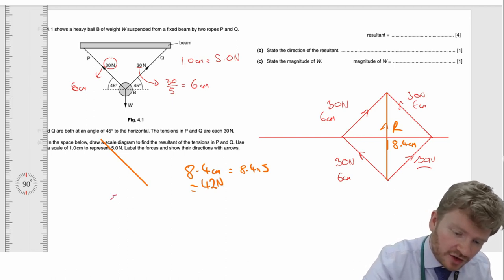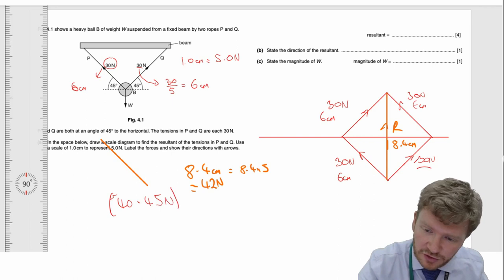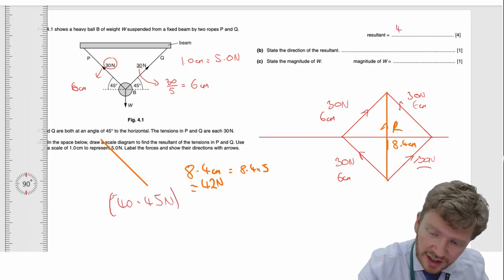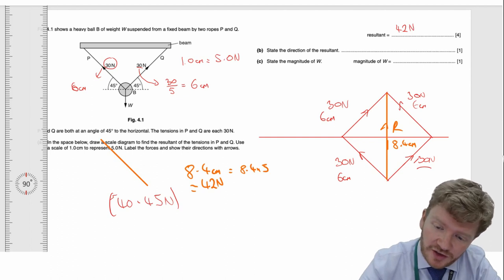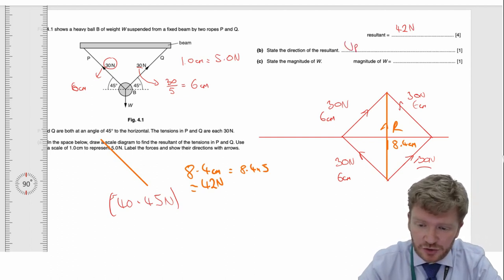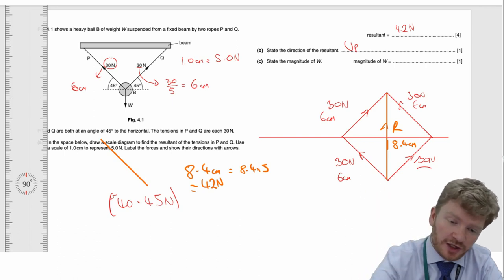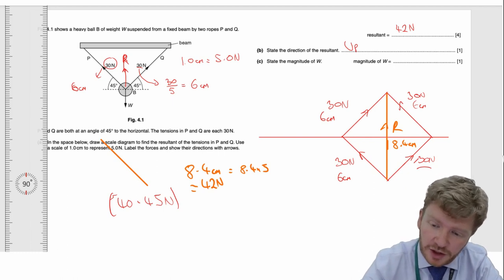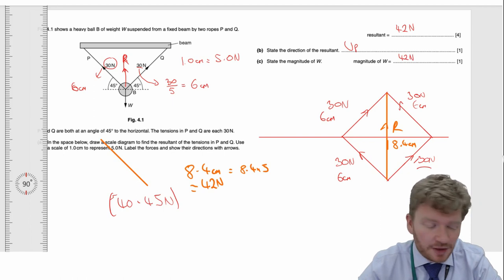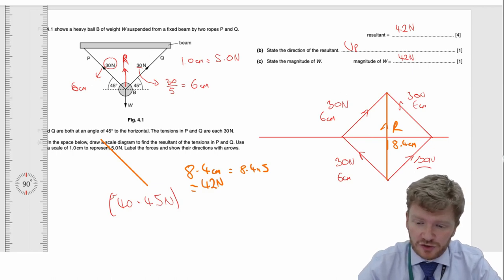The resultant should be around 42 newtons, acting directly upwards. Take the magnitude of W: the ball isn't moving, therefore the total forces going up must equal W. So the weight W should be whatever your answer was to the previous part — in my case, 42 newtons.